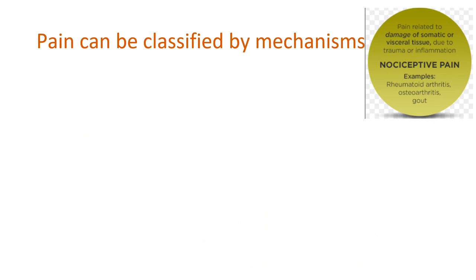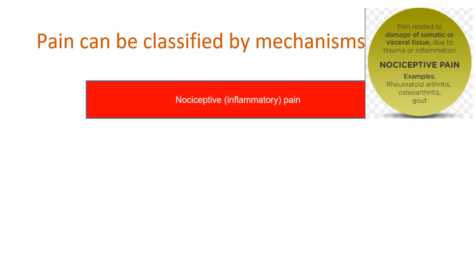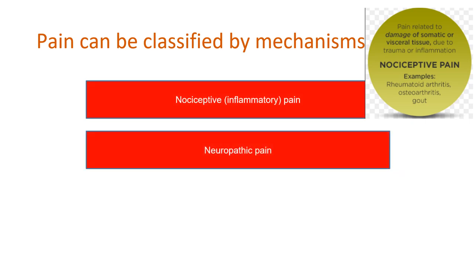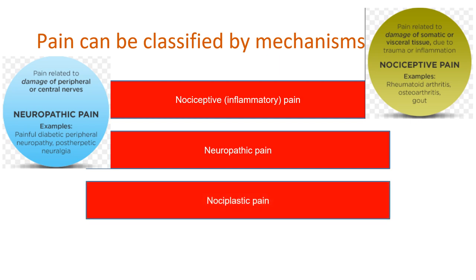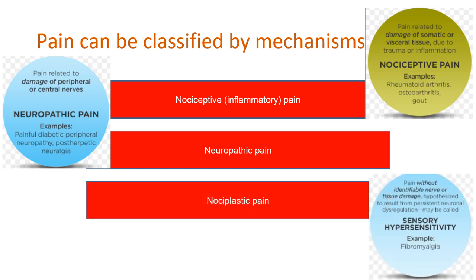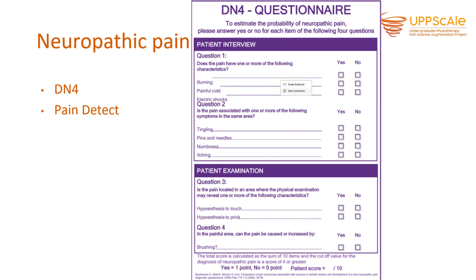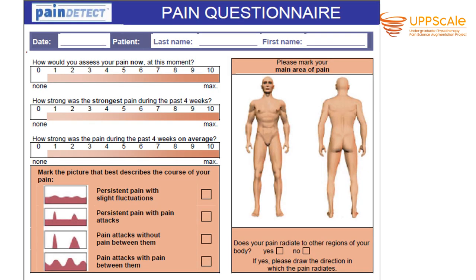You can classify pain by mechanisms — is it nociceptive pain, inflammatory pain, neuropathic pain or nociplastic pain? To diagnose neuropathic pain, you can use the DN4 questionnaire, which is widely used to determine if patients have neuropathic pain, or the PainDETECT questionnaire.